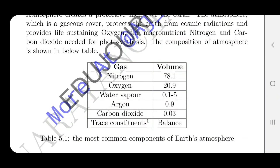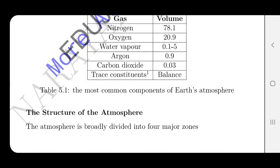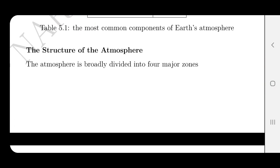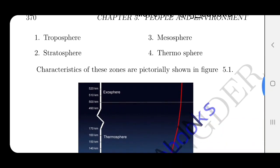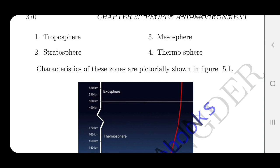The macronutrient gases — nitrogen and carbon dioxide — are needed for photosynthesis. The gases in the atmosphere include nitrogen, oxygen, water vapor, carbon dioxide and trace elements. The atmosphere has four layers: the first layer is the troposphere, the second is the stratosphere, the third is the mesosphere, and the fourth is the thermosphere.